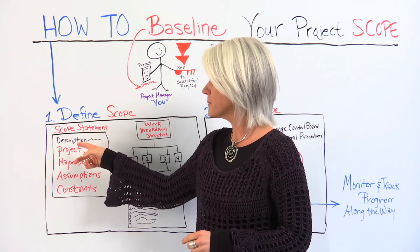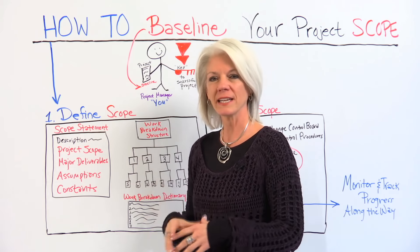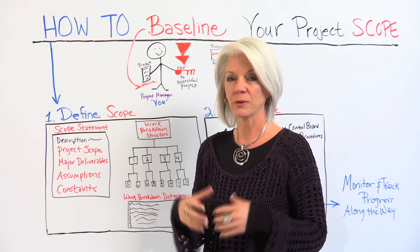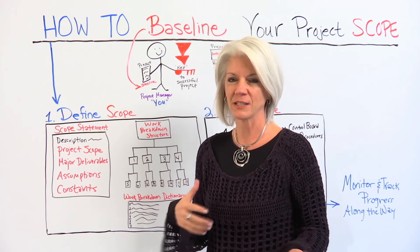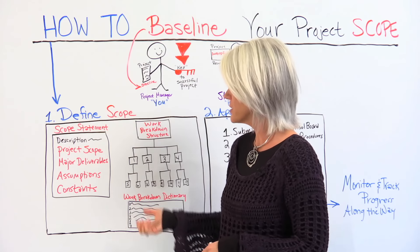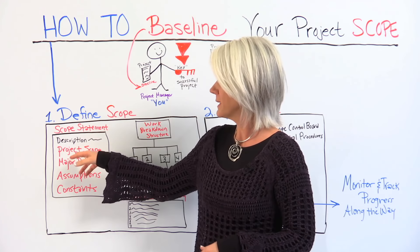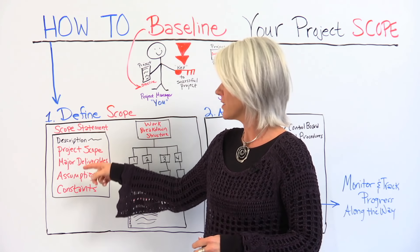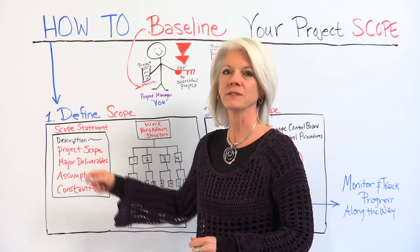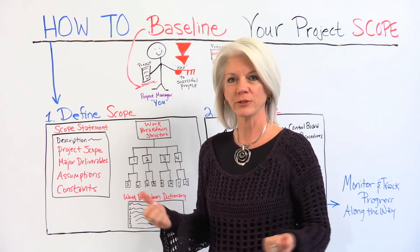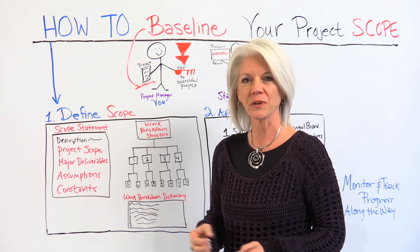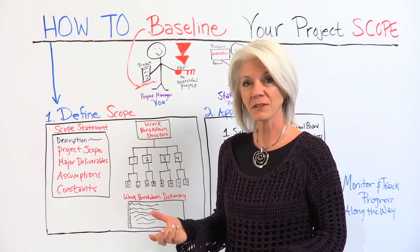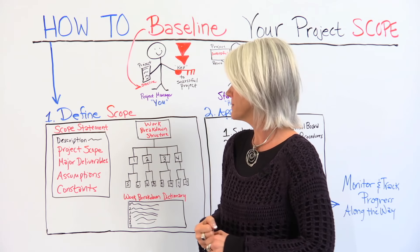The scope statement is a description of the scope — what we're producing as a result of this project. It includes the project scope and also the major deliverables we're going to be producing during and as a result of the project.